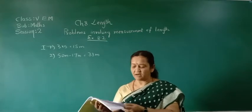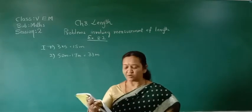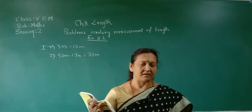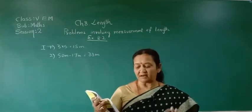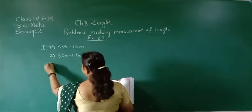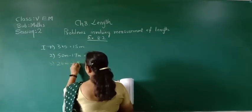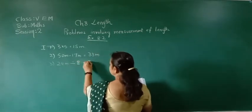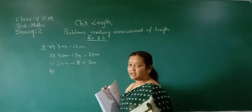Third one: 24 meters of colored ribbon is distributed among 8 students equally. It is given to 8 students equally. Then what is the length of ribbon that each one will get? So this is 24 meters divided by 8. 8 times 3 is 24, so each one will get 3 meters.